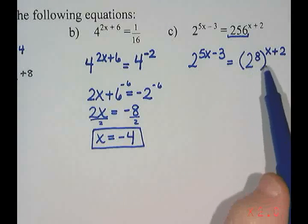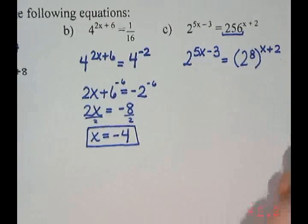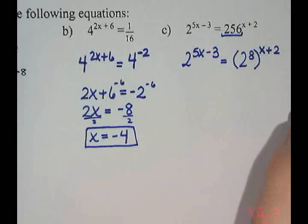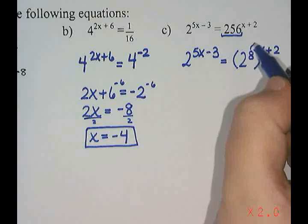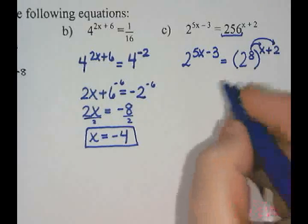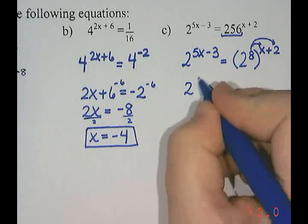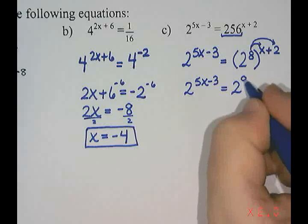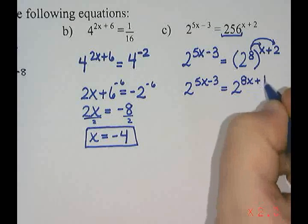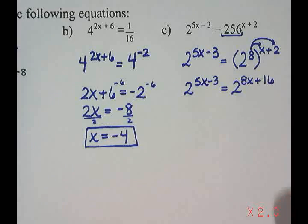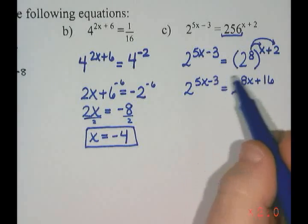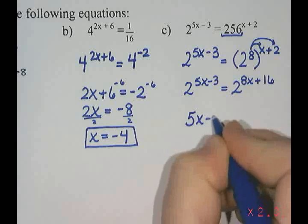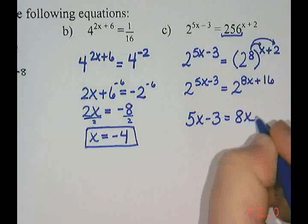Before going further, I'll simplify. I have brackets with an exponent on the outside, and the rule is that we multiply. So I multiply 8 by both the x and the 2, getting 2 to the power of 5x minus 3 equals 2 to the power of 8x plus 16. Now that both bases are the same, the exponents must be equal: 5x minus 3 equals 8x plus 16.